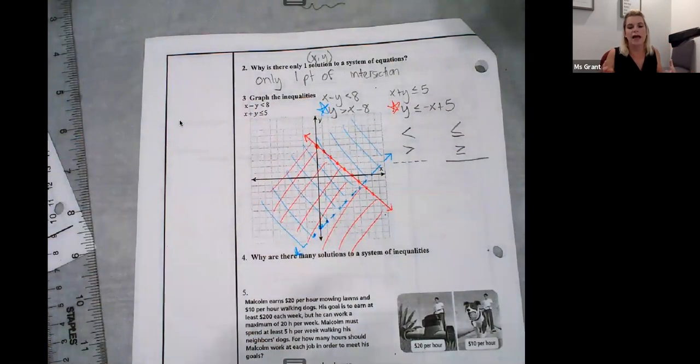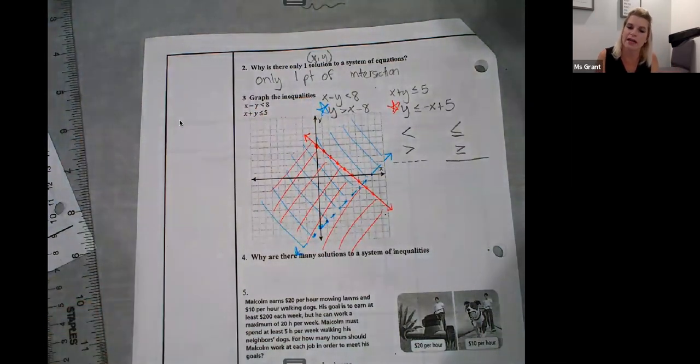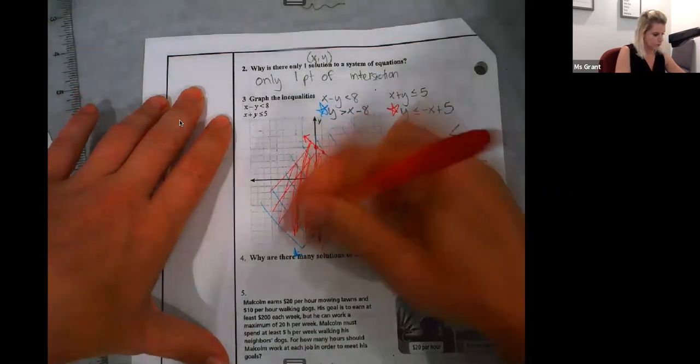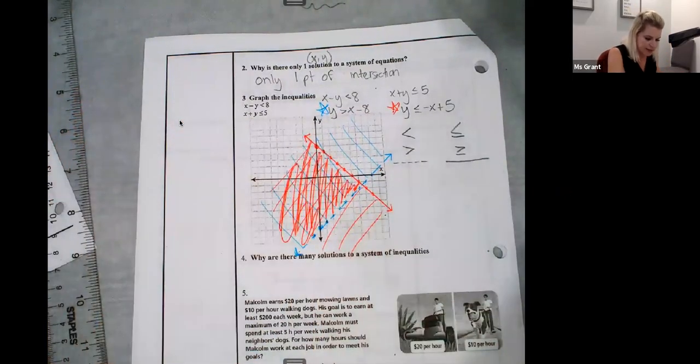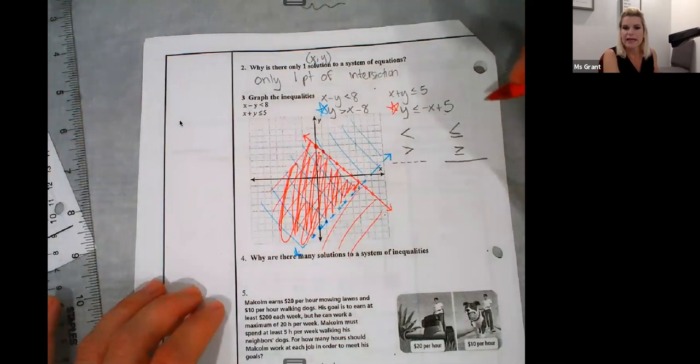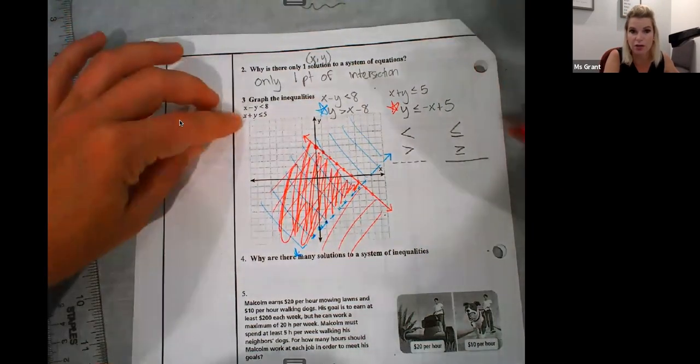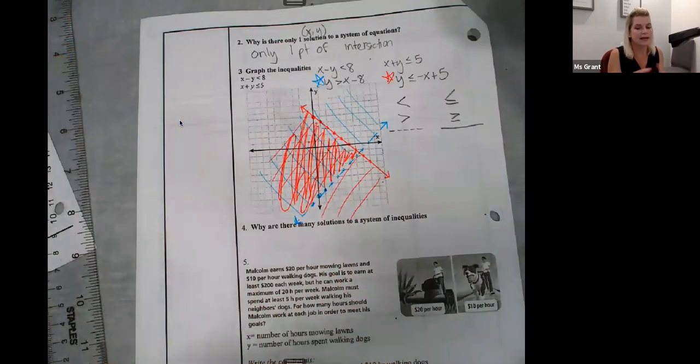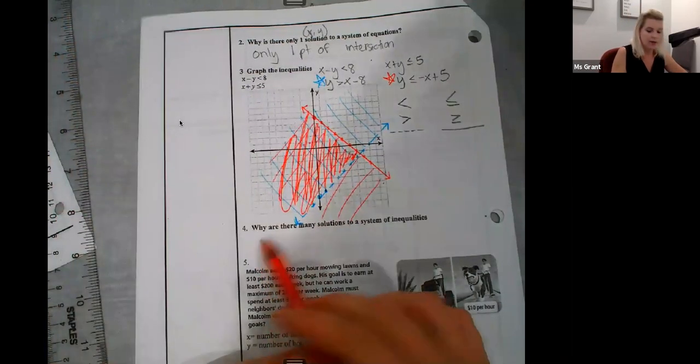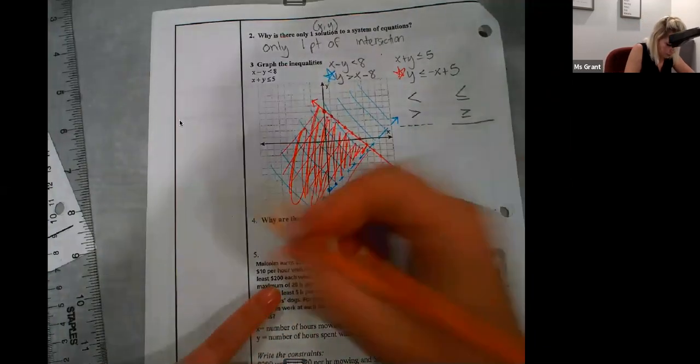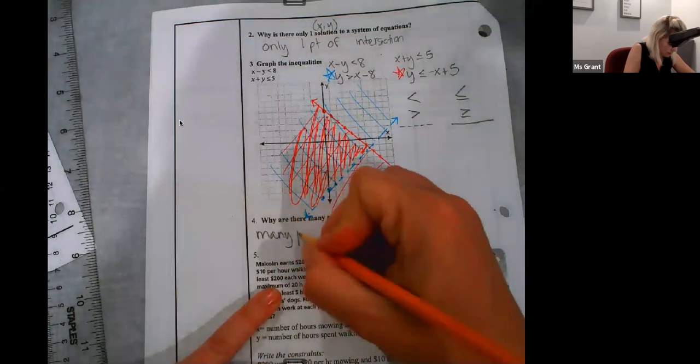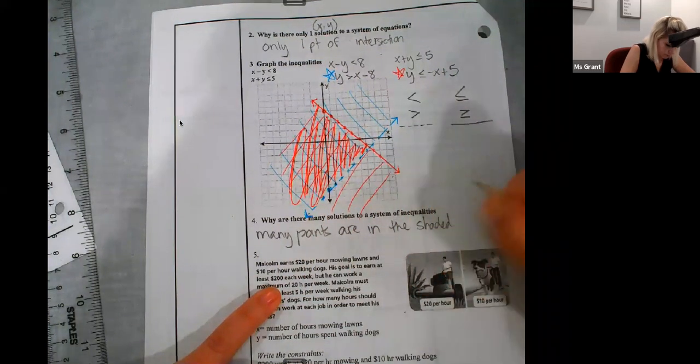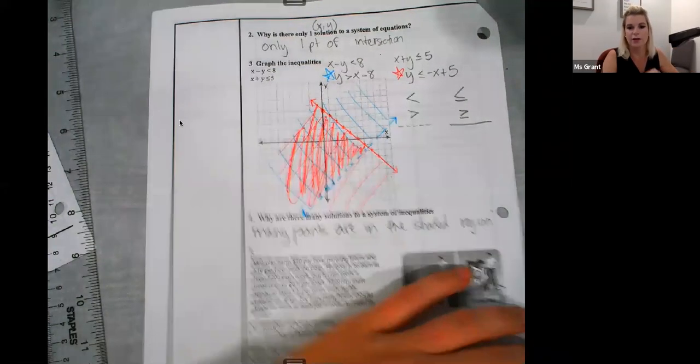Now, in systems of inequalities, we care where the two shadings overlap. It's right here. So I'm going to make it super dark. This area is my solution. Every single ordered pair in this shaded region is an XY coordinate that I could plug back into my original and get a true statement. Why are there many solutions? Well, there are many points in the shaded region. Many, many points are in the shaded region.